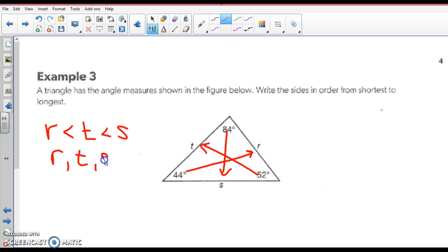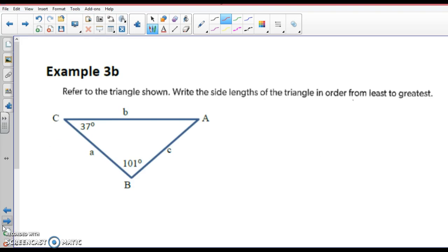But in your homework, some of the answers are going to be written like that, and I want you to understand what it means. Alright. Write the side length of the triangle from least to greatest. Well, the first thing we need to do is find this missing angle. Well, let's do 101 plus 37 is 138, and subtract that from 180 and it's 42 degrees. So this angle is 42 degrees. So we want least to greatest. So smallest angle is 37, opposite that is side C. That's the smallest. 42 is next, opposite that is A. And 101 is the largest, so B is the largest. Smallest to largest.